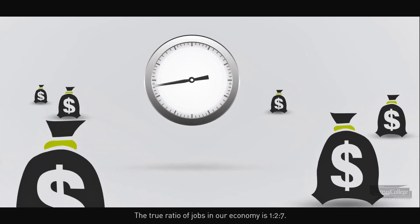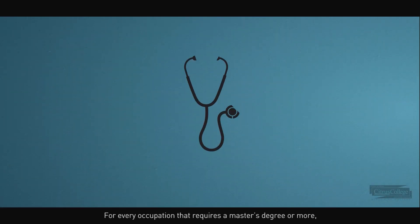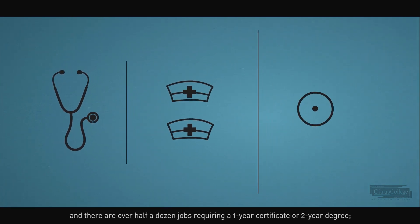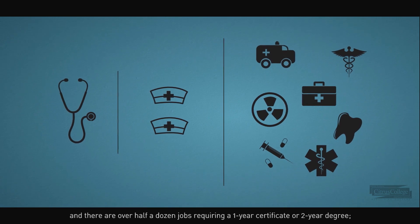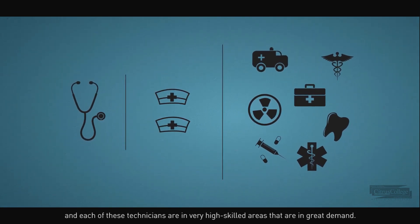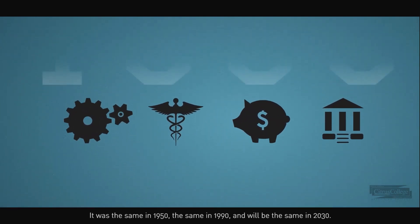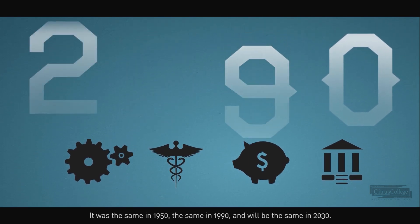The true ratio of jobs in our economy is one, two, seven. For every occupation that requires a master's degree or more, two professional jobs require a university degree, and there are over half a dozen jobs requiring a one-year certificate or two-year degree. And each of these technicians are in very high-skilled areas that are in great demand. This ratio is fundamental to all industries. It was the same in 1950, the same in 1990, and will be the same in 2030.